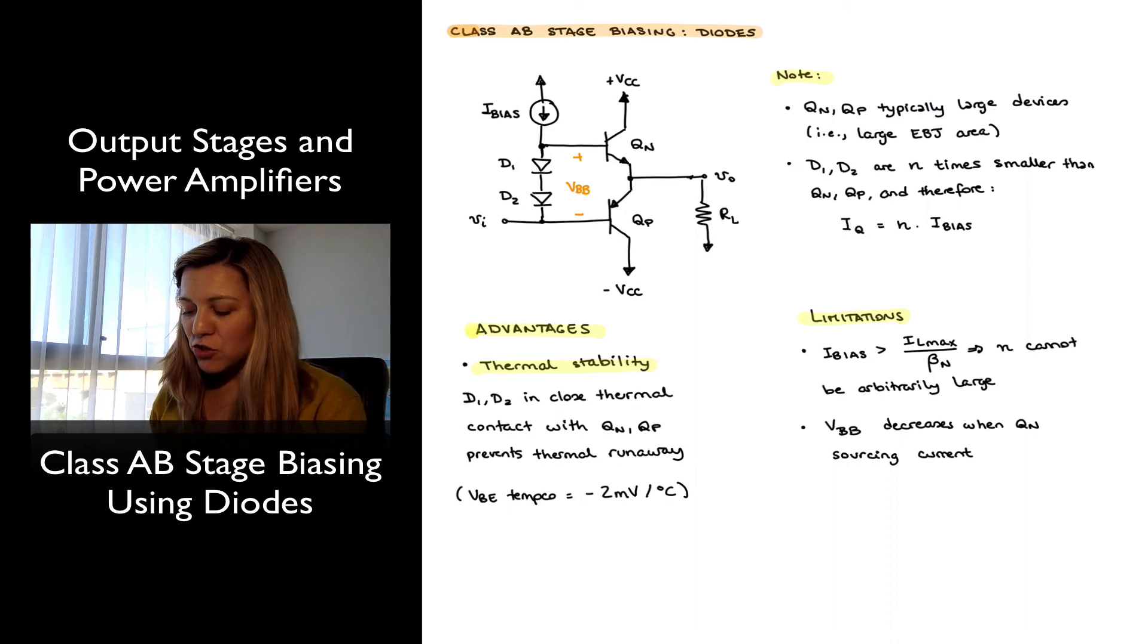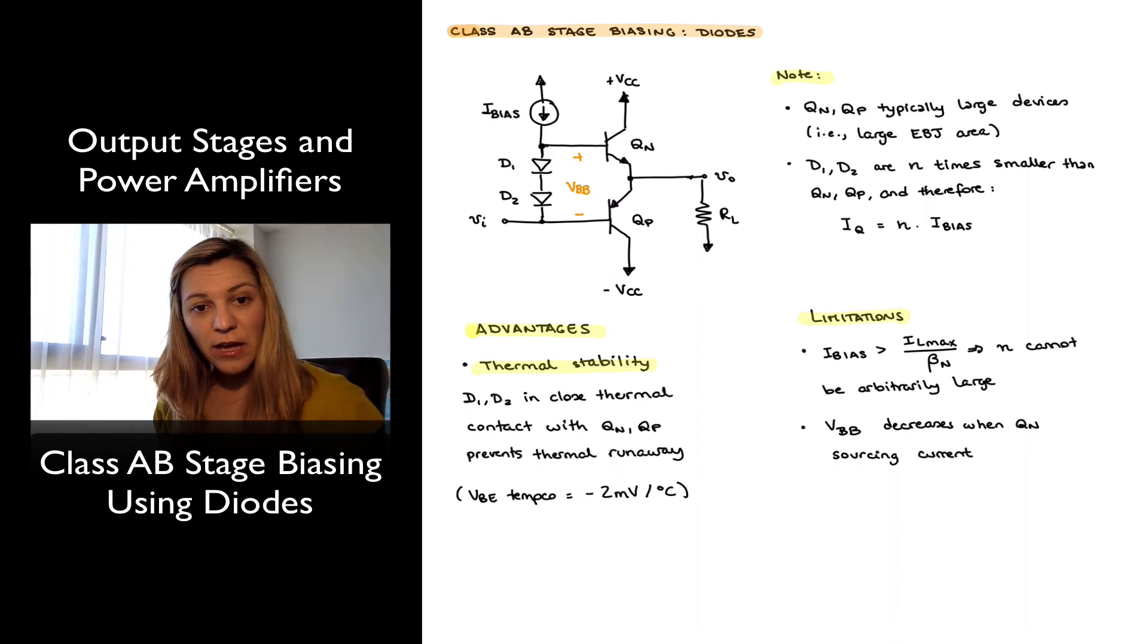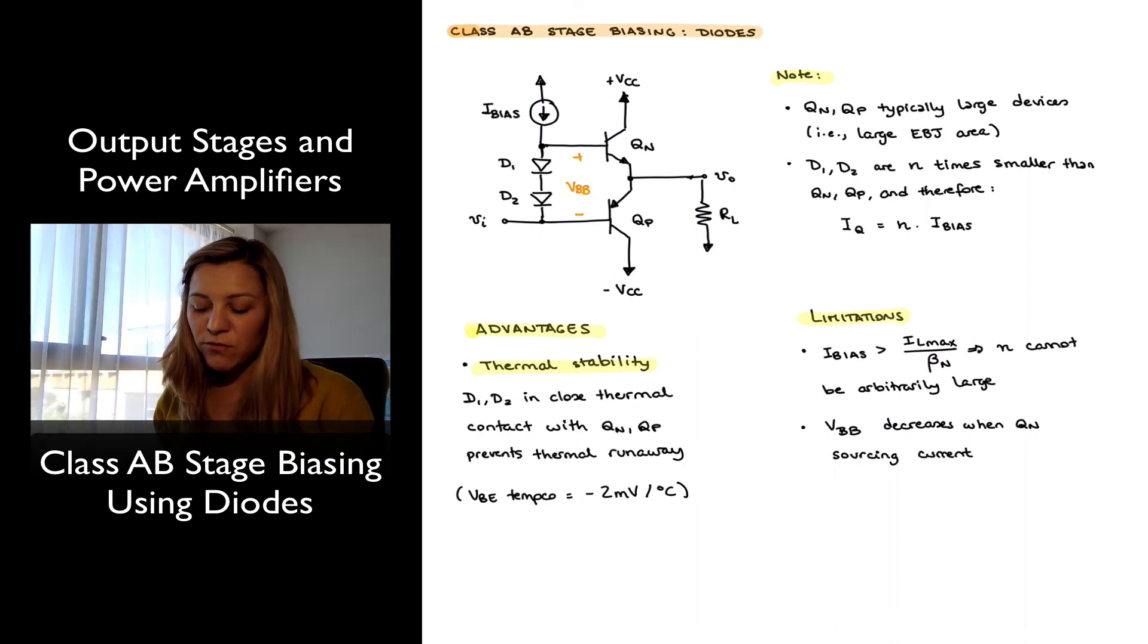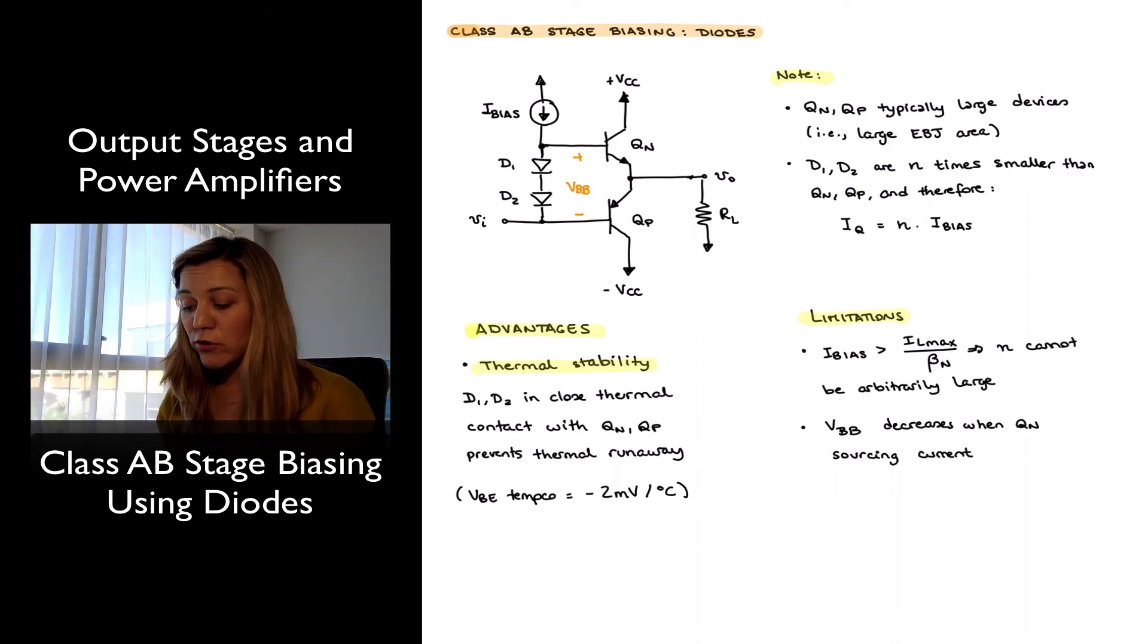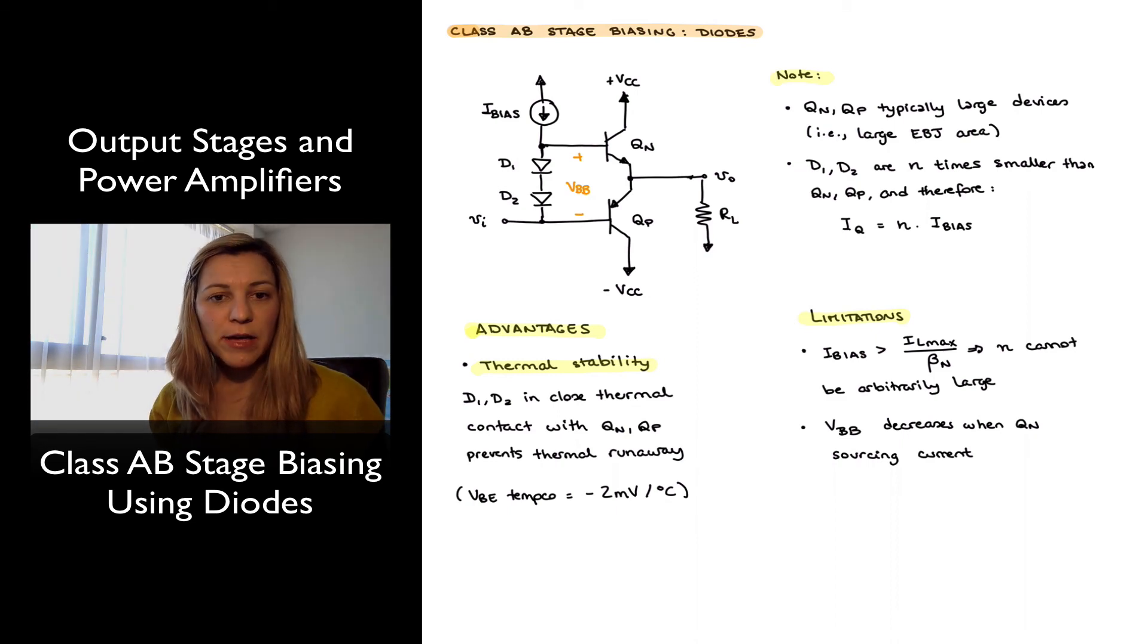Another disadvantage or limitation is that when Qn is sourcing current, there is a decrease in the amount of current flowing through the diodes D1 and D2, because part of the I-bias current has to go to the base of Qn, and therefore there is a small decrease in that VBB voltage, since there is a relationship between the current through a diode and the voltage across a diode. And so there are other configurations that will give a more stable value for that bias voltage.